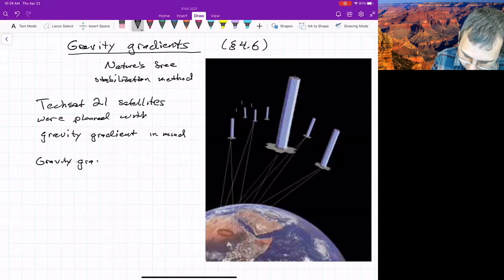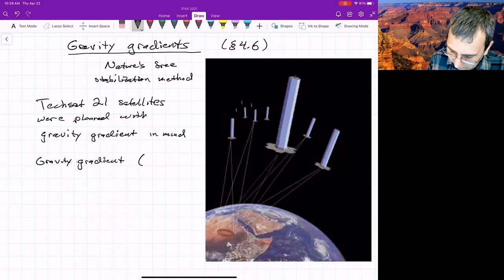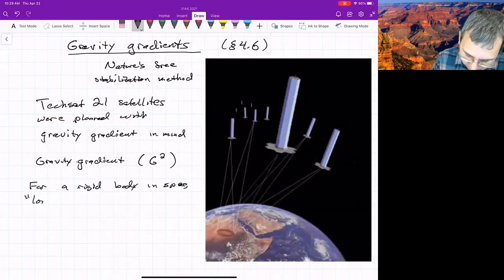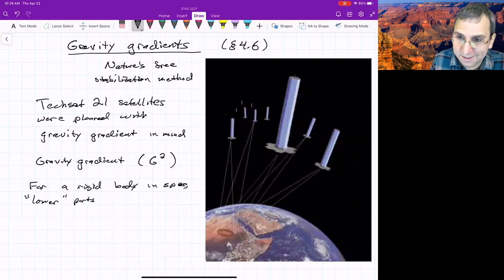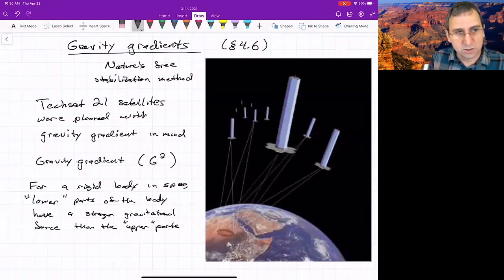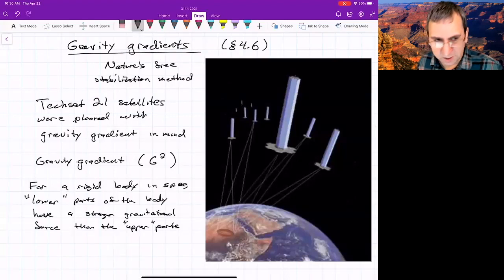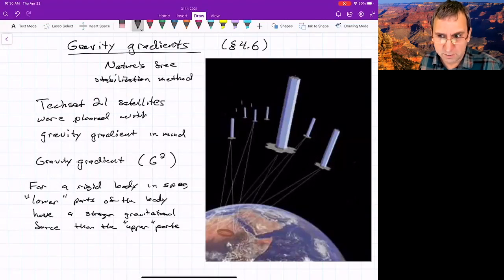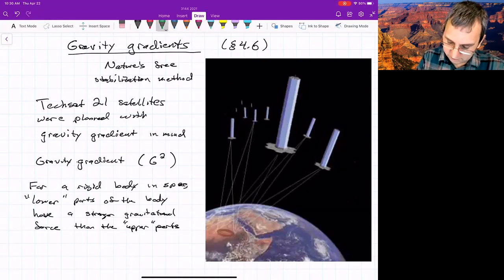Sometimes gravity gradient, someone thought they were clever and gave it a little symbol and called it G2, G squared. So the idea is for a rigid body in space, the lower parts, the parts closer to the middle of the Earth, have a stronger gravitational force than the upper parts, which leads to restoring torque. But it gets complicated. We've got 3D shapes here. We might say the lower parts are heavier, which is utterly confusing.